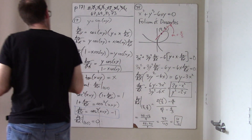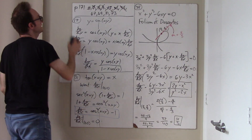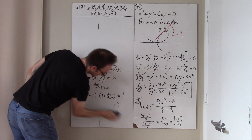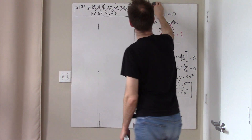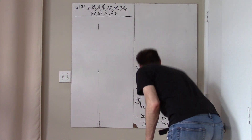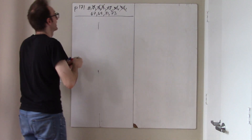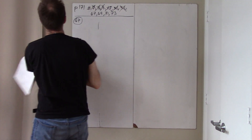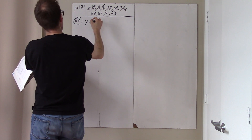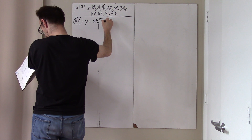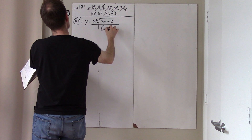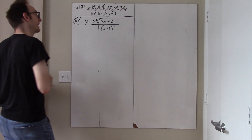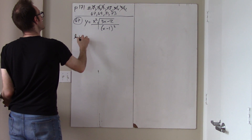That was the tedious part of this homework. Four problems to go — these are a little bit easier. Problem 67: y = x²·√(3x - 2) / (x - 1)². Now you might think this problem sucks because of all the chain rule, product rule, and quotient rule, but what you're supposed to do is use logarithmic differentiation. Take the natural log of both sides, and by applying log rules, this becomes: ln y = ln(x²) + ln(3x-2)^(1/2) - ln(x-1)².